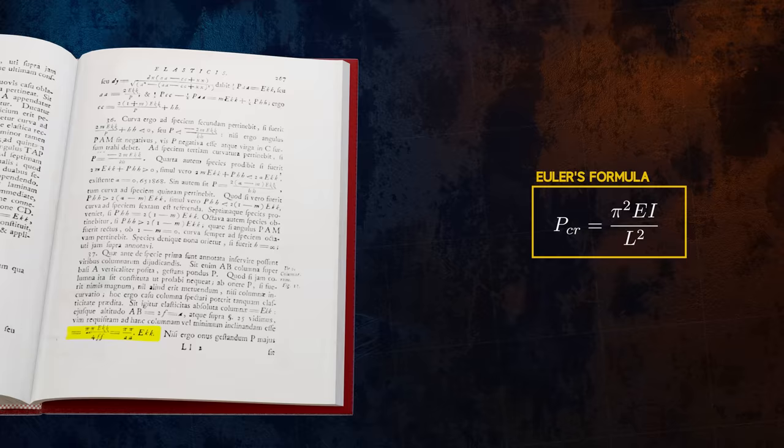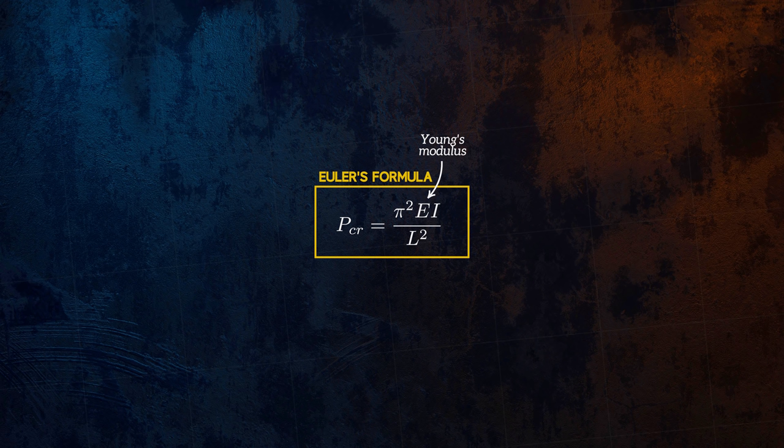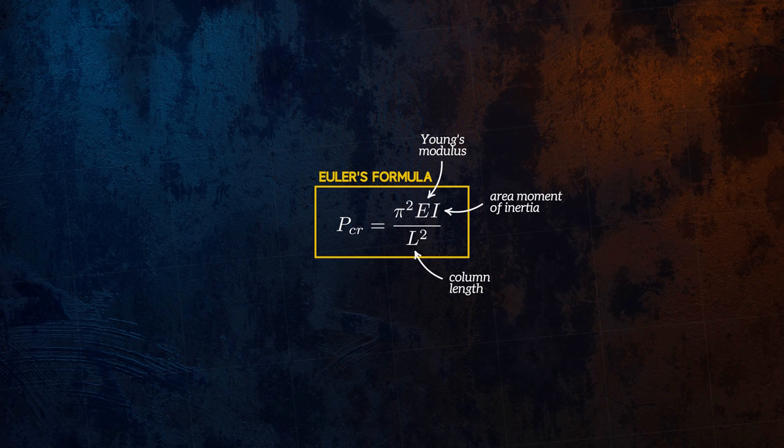The critical load at which a column will start buckling depends on only three parameters: the Young's modulus of the column material, the area moment of inertia of its cross section, and its length. It doesn't depend on the strength of the material at all.